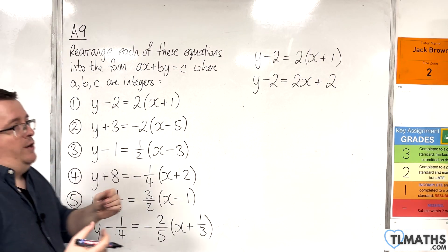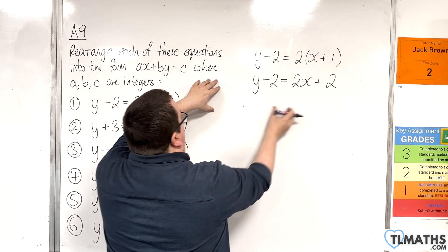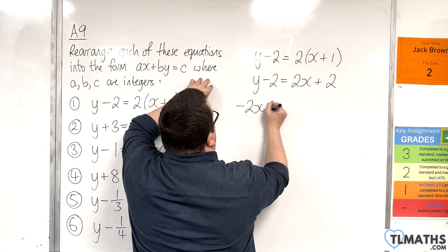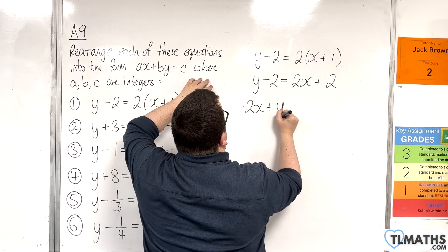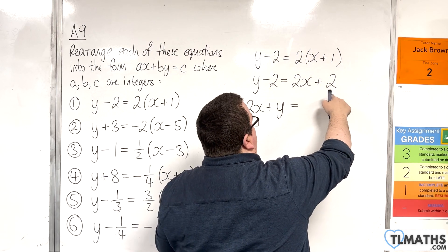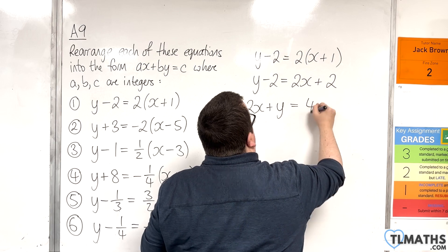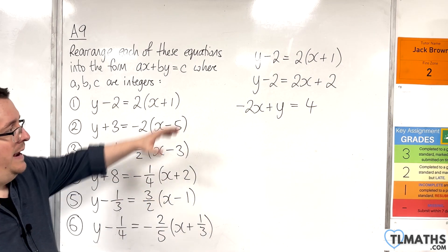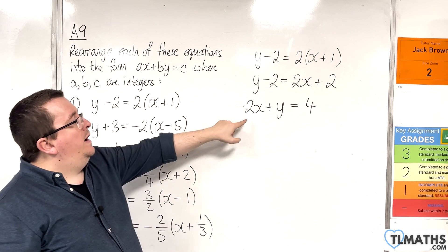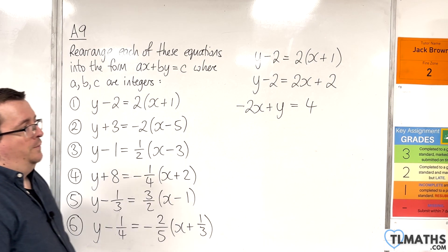Now you can rearrange it. If I subtract 2x on both sides, I want to get the x and y on the left hand side. So minus 2x, keep the y where it is. And that minus 2 — I'm going to add 2 to both sides, and I get 2 plus 2, which is 4. So that is now in the required format, where a is minus 2, b is 1, and c is 4.